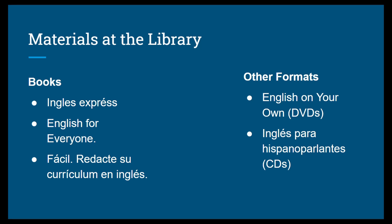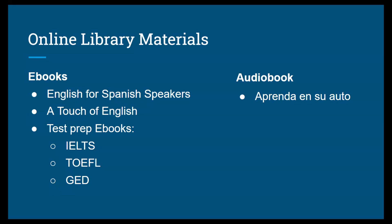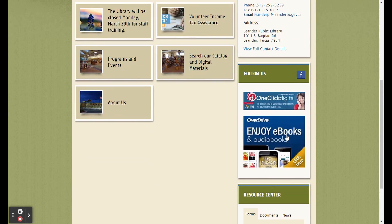You can also request them online or by phone. There are also library English learning materials available online through Overdrive, the app for ebooks. Some of the ebooks available include English for Spanish Speakers, A Touch of English, and test prep ebooks for specific assessments. These last books include the most recent editions for each type of test. There is one audiobook available: Aprenda en su Auto. You can access the Overdrive app through the link on the library's webpage.